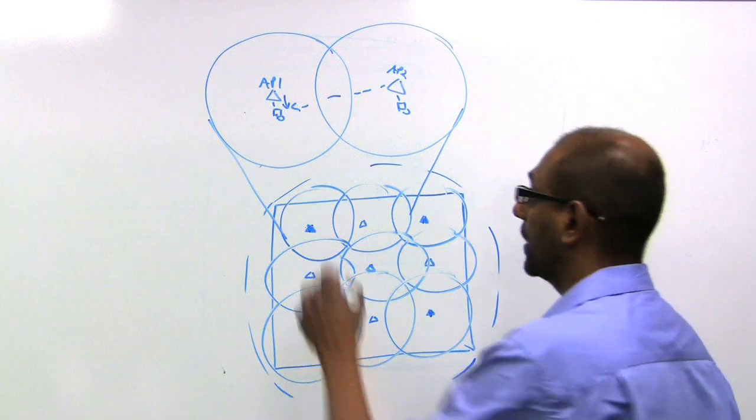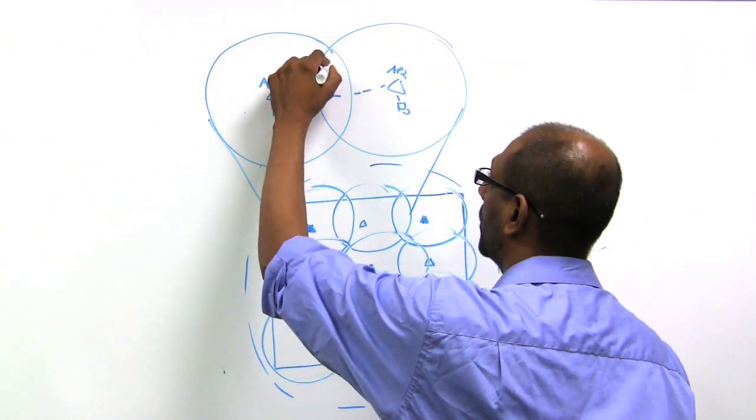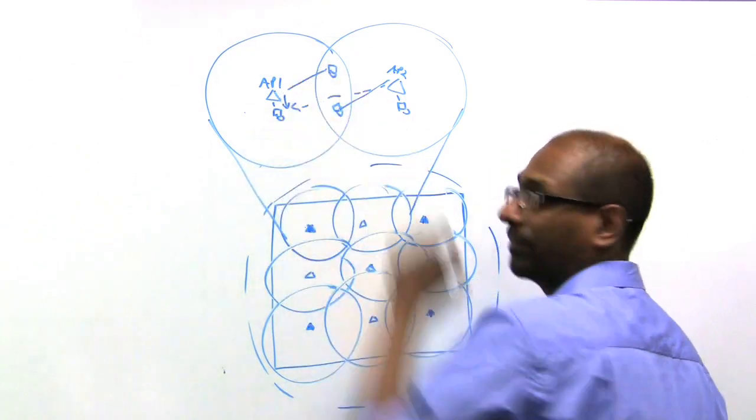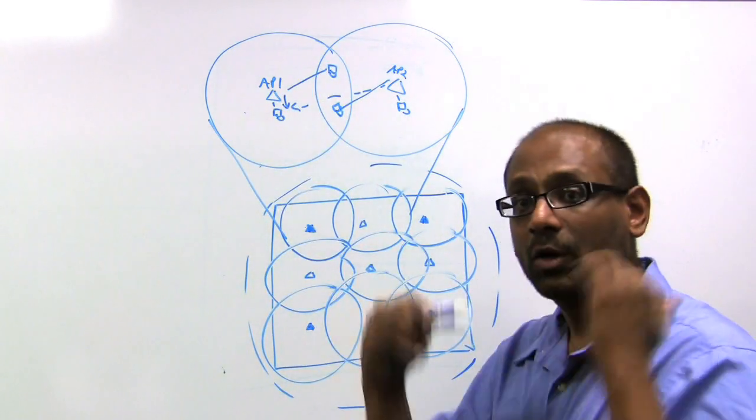Now conversely, if it turns out that AP1 is trying to talk to station 1, this station here, while AP2 is trying to talk to this station here, that will cause a collision.